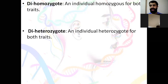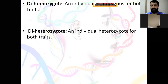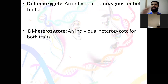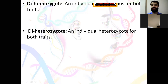Dihomozygous means an individual that is homozygous for both traits. For example, homozygous for blood group AA and homozygous for eye color GG — this is dihomozygous. Diheterozygous means an individual that is heterozygous for both traits. For example, heterozygous for blood group (AO) and heterozygous for eye color (brown and green, where brown is dominant) — this is diheterozygous. There is a difference between dihomozygous, diheterozygous, bidominant, and birecessive.